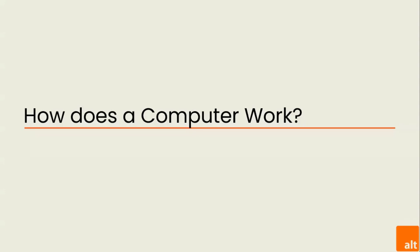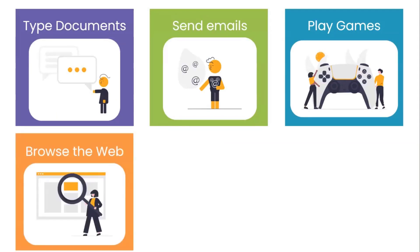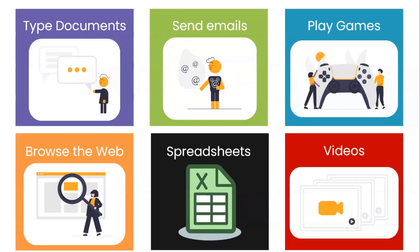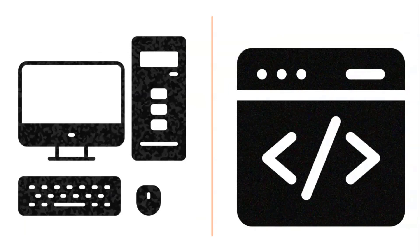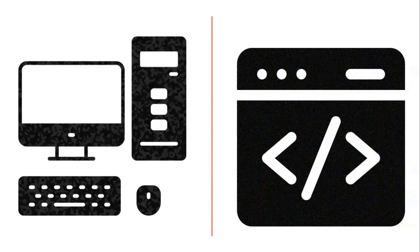A computer is an electronic device that manipulates information or data. It has the ability to store, retrieve, and process data. You may already know that you can use a computer to type documents, send emails, play games, and browse the web. You can also use it to edit or create spreadsheets, presentations, and even videos. Composed of hardware and software, computers operate on two levels. They receive data through an input route, either live or through a digital storage unit, and send out an output.